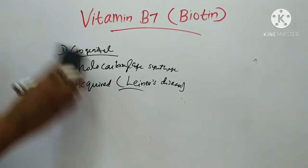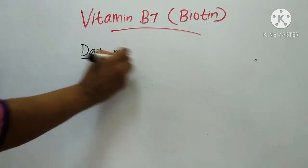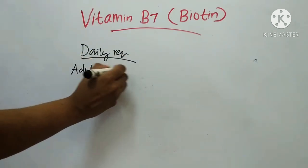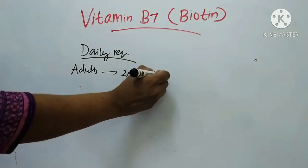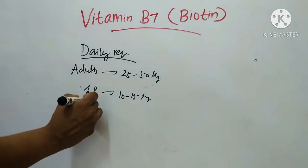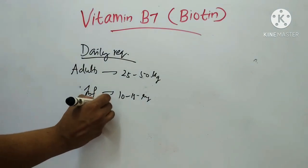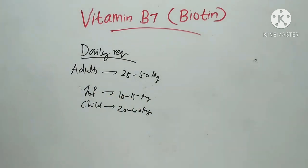Regarding daily requirements, in adults it is about 25 to 50 micrograms daily; in infants, 10 to 15 micrograms daily; in children, about 20 to 40 micrograms daily. This requirement increases during pregnancy, lactation, and prolonged oral antibiotic therapy. This concludes today's topic on Vitamin B7. Thank you for watching.